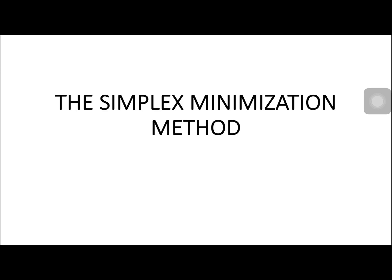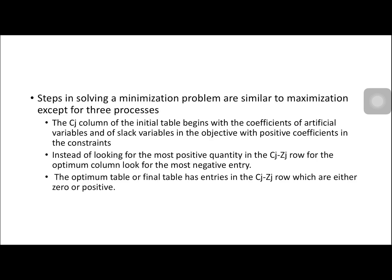Good morning. Our topic is the Simplex Minimization Method. For the steps in solving a minimization problem, these are similar to maximization, except for three processes. The Cj column of the initial table begins with the coefficients of artificial variables and of slack variables in the objective with positive coefficients in the constraints. Instead of looking for the most positive quantity in the Cj-Zj row for the optimum column, look for the most negative entry. The optimum table has entries in the Cj-Zj row which are either 0 or positive.